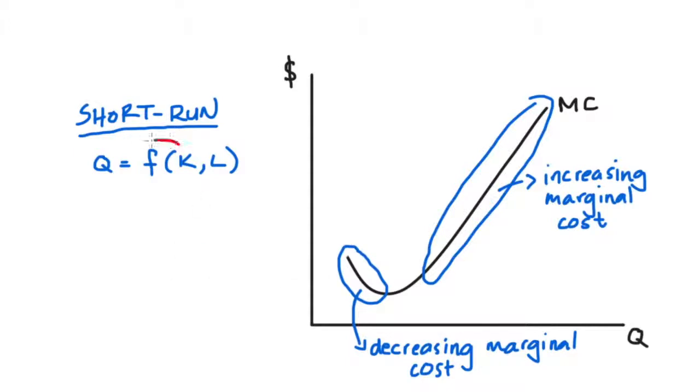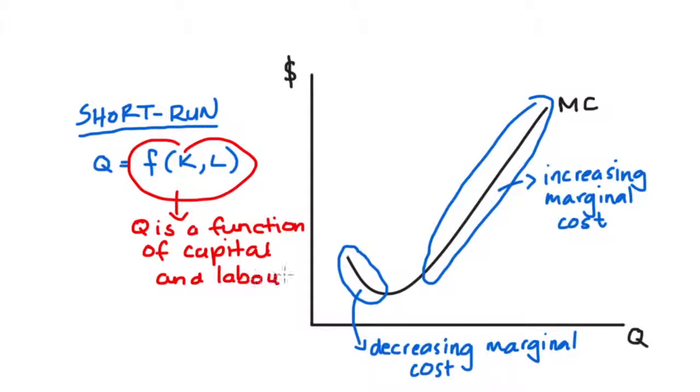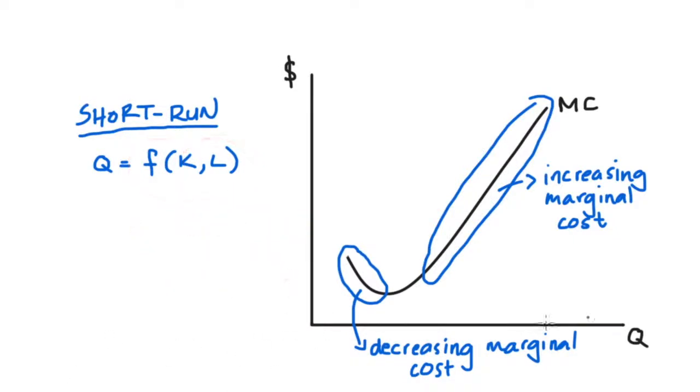Don't worry, this notation here is just called functional notation. All this means is exactly how I said it, that the quantity produced by the firm is some function of or dependent on the level of capital and the level of labor. The important thing is that in the short run, our capital is fixed. So if a firm wants to increase its output, wants to increase its Q, it can only change its level of labour.